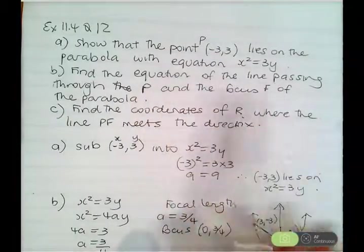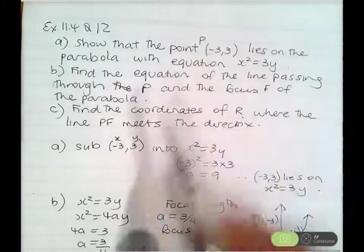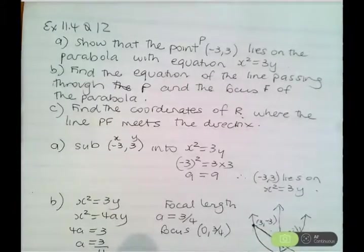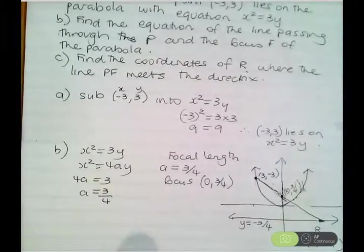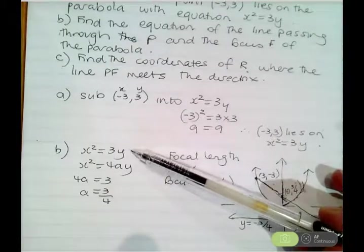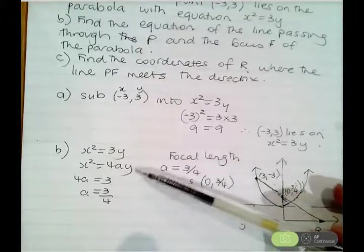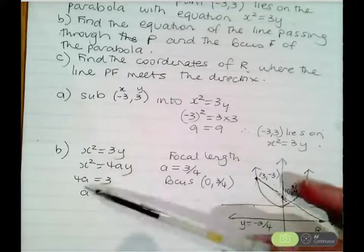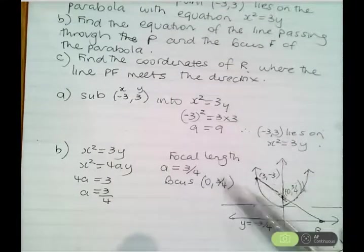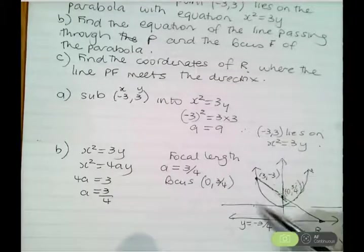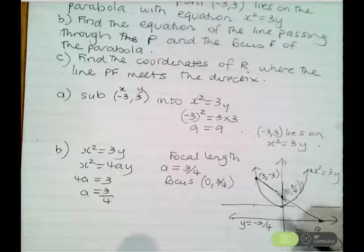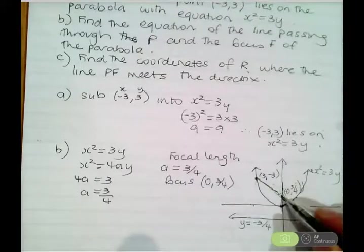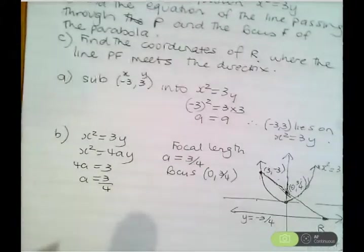Part B says find the equation of the line passing through point P and the focus F. The parabola has equation x squared equals 3y, which is of type x squared equals 4ay, so 4a equals 3, giving a equals 3 quarters. Since it's concave up with vertex (0,0), the coordinates of the focus are (0, 3 quarters).